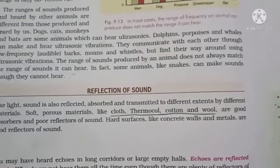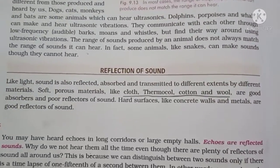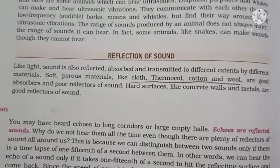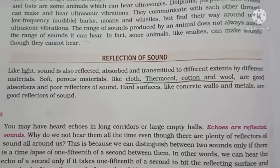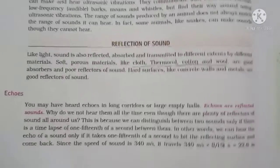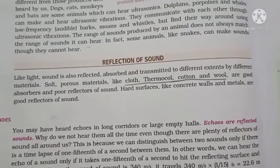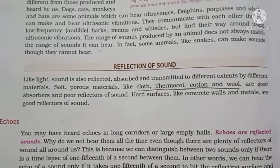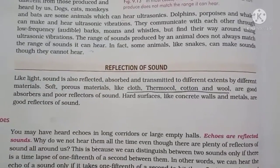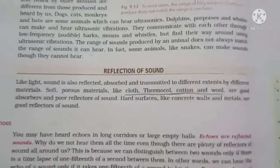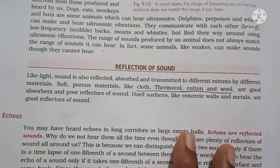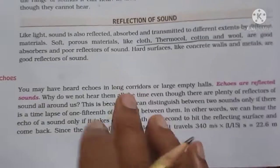Hard surfaces like concrete walls and metals are good reflectors of sound. You must have experienced in your house that when you take out everything from a room for whitewashing and speak in that room, you can hear the reflection of sound — the echo, the repeated sound. But when the room is filled with curtains, clothes, and other things, you don't hear any reflection of sound. The reflection of sound is known as an echo. Echoes are reflected sounds. You must have heard echoes in long corridors or large empty halls.